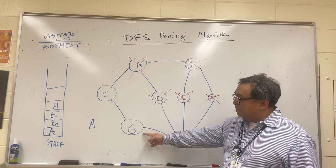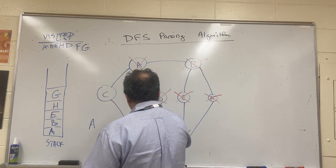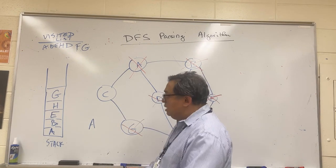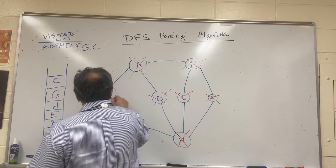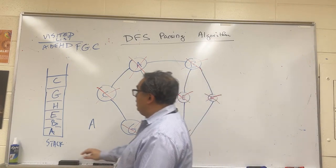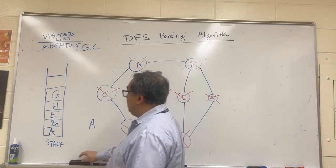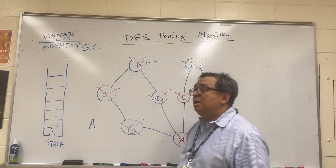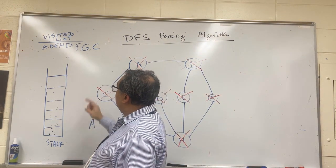From H, there's still G — we push G onto the stack and mark it visited. At G, there is C, so we visit C and mark it visited. At C, all neighbors are already visited, so we pop C. Back at G — no unvisited nodes, pop G. Then we pop H, then E, then B, then A. The stack is now empty, and that tells us we're done.